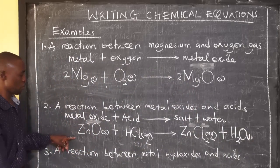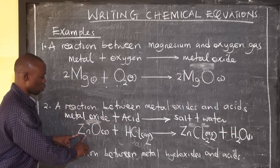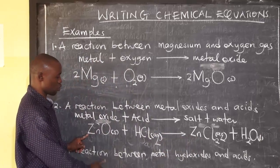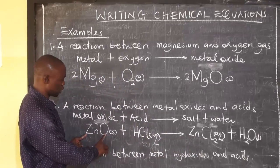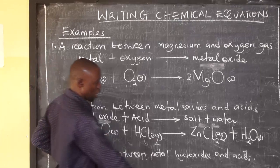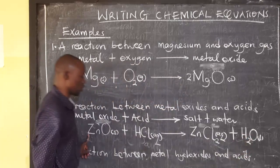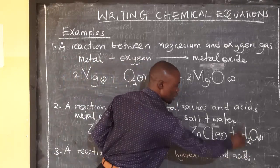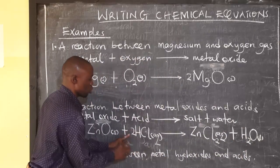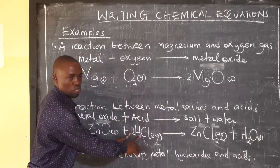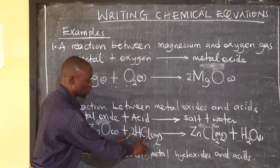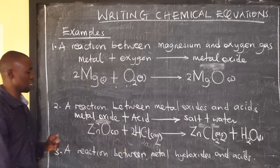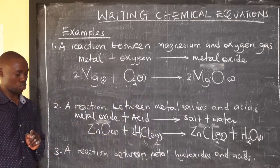Now let's balance it. Zinc is 1 on the left, zinc is 1 on the right — zinc is balancing. Oxygen is 1 on the left, oxygen is 1 in water — balancing. But hydrogen is 1 in HCl and 2 in water, so we put a coefficient of 2 in front of HCl. By putting 2, it affects chlorine — chlorine becomes 2. The equation is now balanced: ZnO + 2HCl → ZnCl₂ + H₂O.